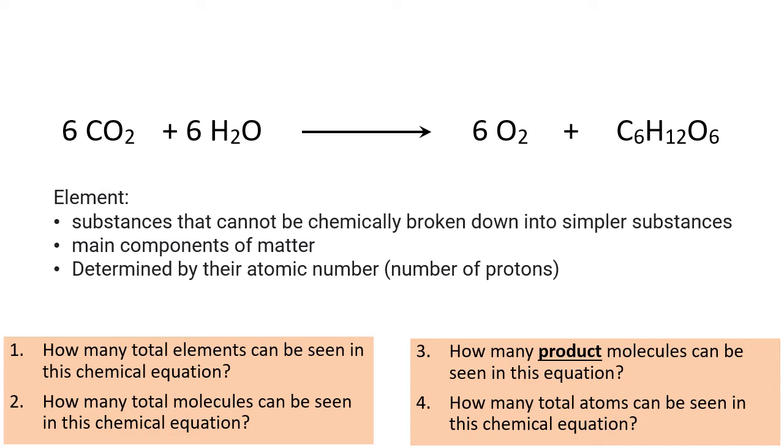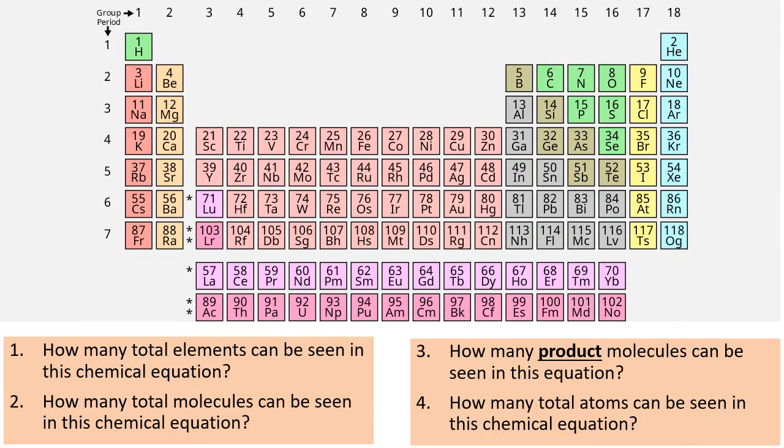For instance, only the element carbon has six protons in it. Only the element oxygen has eight total protons. And when we look at this picture here of the periodic table, this is a list of the known elements. And so H for hydrogen, hydrogen is an element.